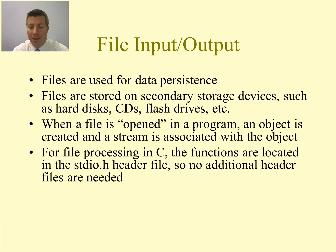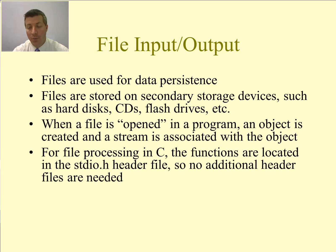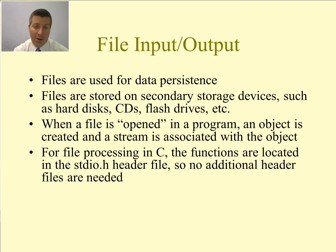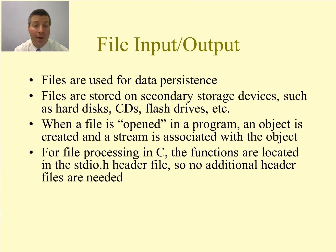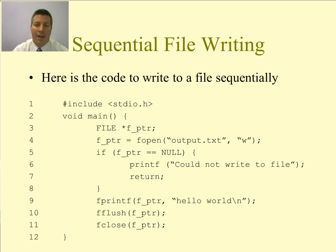When a file is opened in a program, an object is created inside of our code and we have what is called a stream associated with that object. That stream is what gives us the ability to read or write to that file. In C, if we want to do any kind of file I/O, we have to include the stdio.h header file. We typically have already done that, so there are no additional header files needed for file input and output.